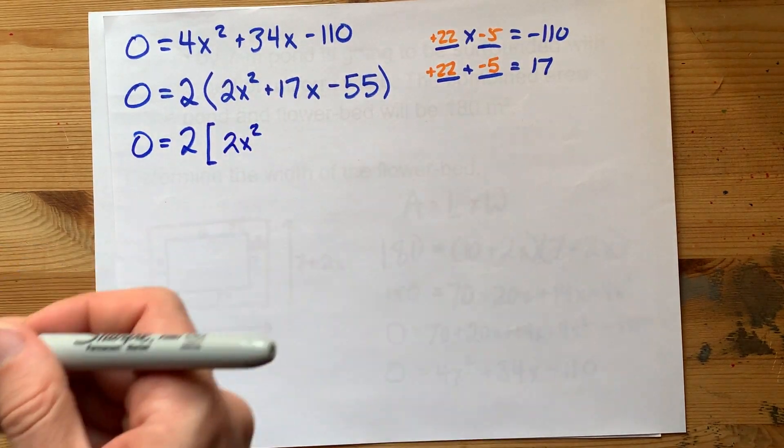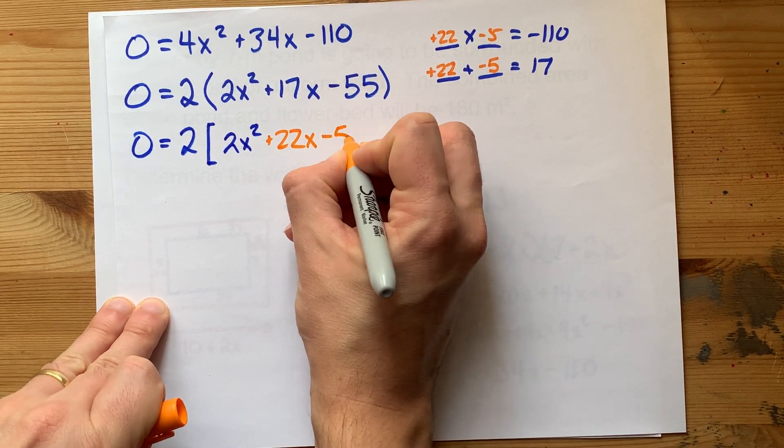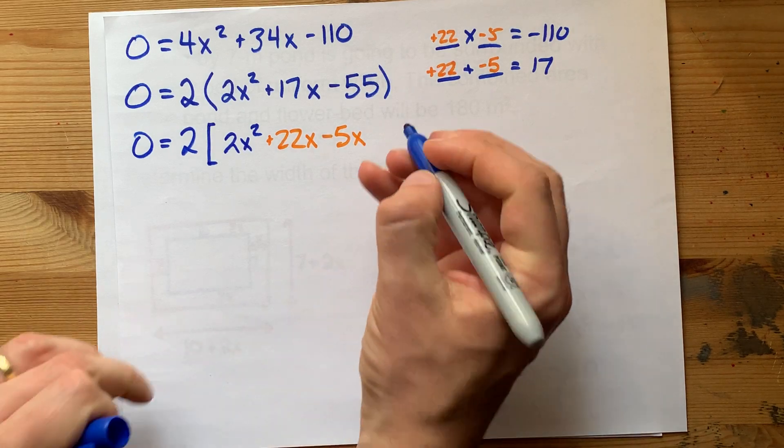This plus 17 instead gets written as plus 22x minus 5x. See how those together are plus 17x? We're just rewriting them that way so that we can factor by grouping.